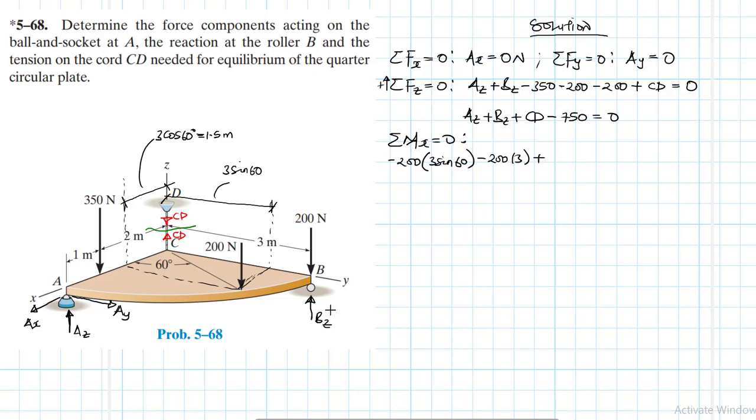And then we have BZ. It's like BY is always in my vocabulary, you know, BZ. This one is positive, by 3. So this is equal to 0. Therefore, my BZ gives me, minus 200 times 3 sine 60 minus 200 by 3, then divided by 3. So we have 373.20508. So we can round off this one. So we will have 373.21 newtons.